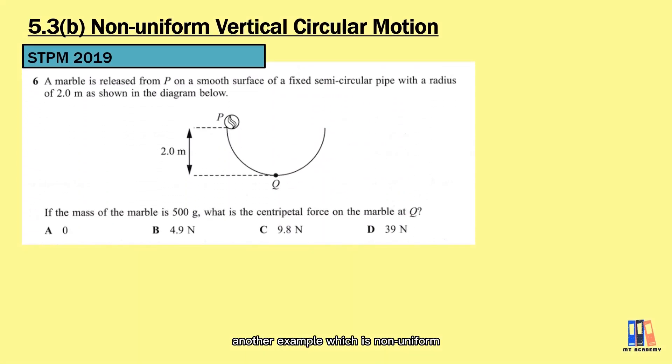Next, we are going to look at another example which is non-uniform vertical circular motion. This was tested in 2019. A marble is released from P on a semi-circular path with radius 2 m. Given the mass of marble is 500 g, what is the centripetal force?